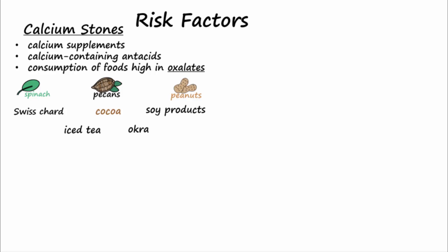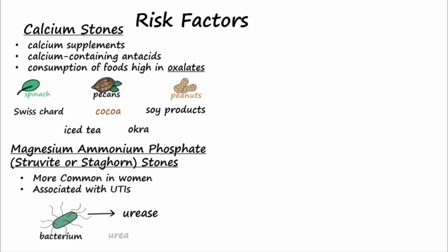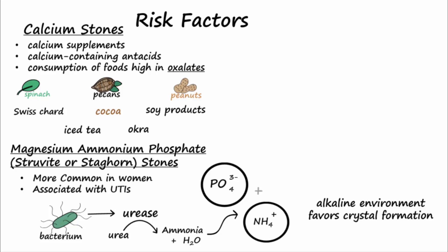Magnesium ammonium phosphate stones form more commonly in women, and especially in those with recurring UTIs. Certain bacteria use the enzyme urease to convert urea into ammonia, which is basic. The now more alkaline environment increases phosphate in the urine, which combines with ammonium and magnesium ions to form the stones.